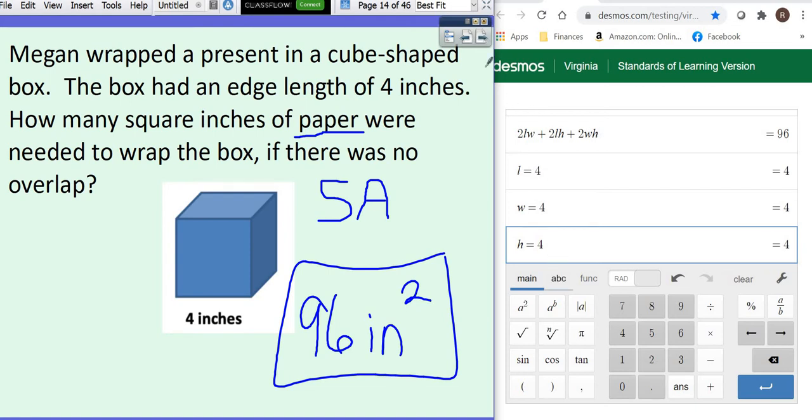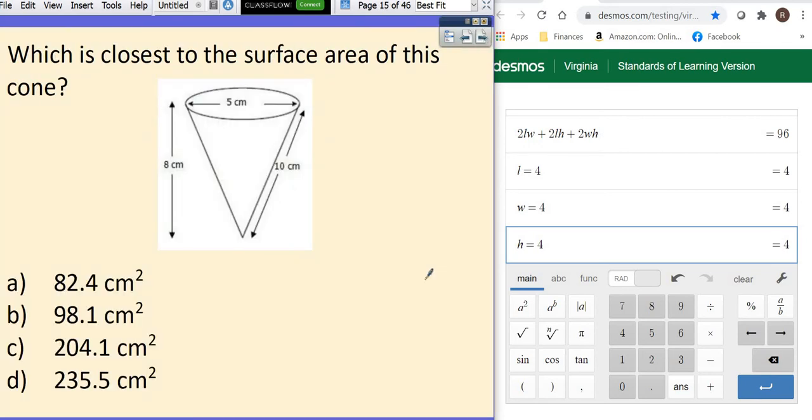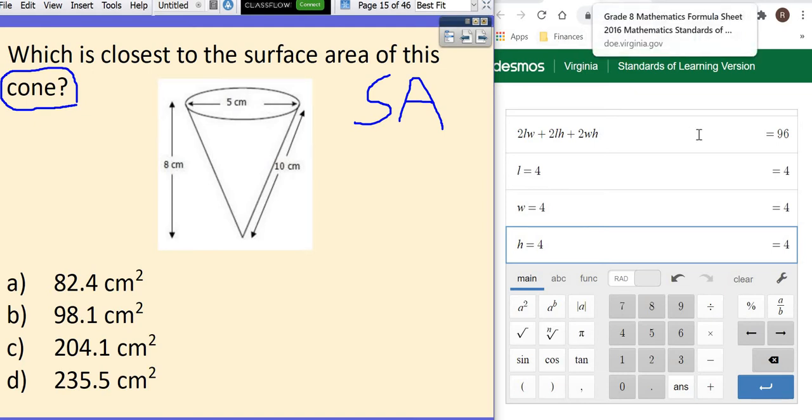Use your calculator exactly the way we are showing you because that will save you so many mistakes. Which is the closest to the surface area? This time it tells you you are looking for surface area of this cone. Now they may show you an ice cream cone, they may show you a party hat. But look, if one base is a circle and it's pointy, that's a cone.